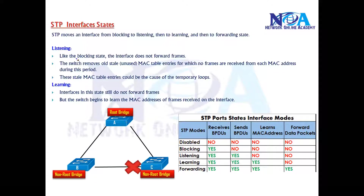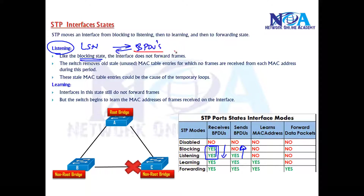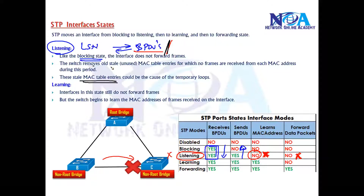During convergence the port will first enter the listening state, which is similar to blocking state. In listening state, the port will send and receive BPDUs — that is required for the port role selection process. However, it will not learn MAC addresses or update the MAC table, and it will not forward any traffic. Any older MAC entries for which no frames are received during this period will be removed.